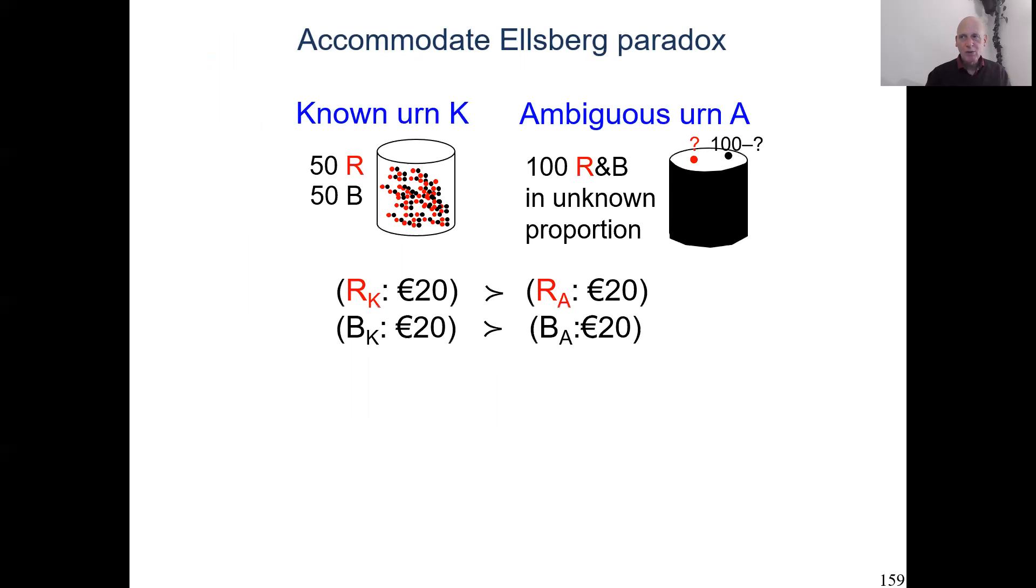Now let us move on to the next job. Let us accommodate the Ellsberg paradox. Here I repeat the Ellsberg paradox. There's a known and an unknown ambiguous urn. Here we have unknown composition. People rather gamble on the two colors of the known urn than of the unknown urn. We have these two strict preferences. Now you can try to find for yourself how rank-dependent utility can accommodate this finding.